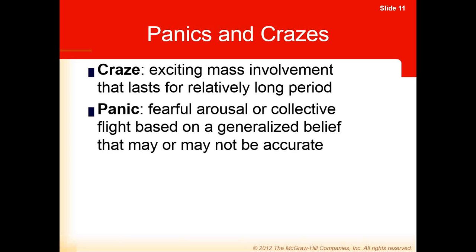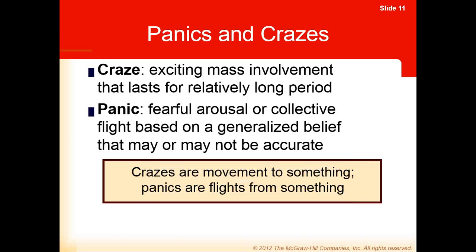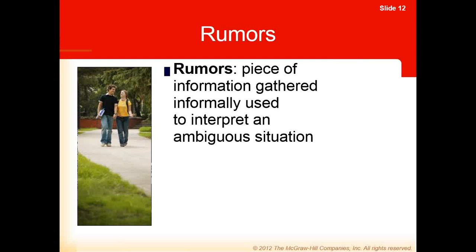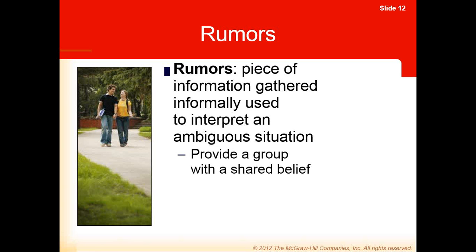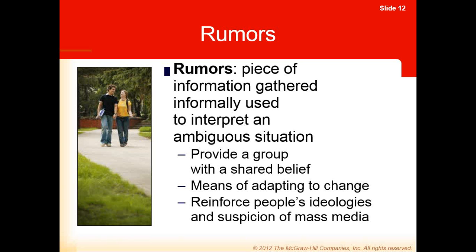Crazes — like raves or breakdancing — are examples. Rumors are information gathered informally to interpret an ambiguous situation. Rumors don't necessarily have to be true; they're just information people use to understand what's going on. Rumors provide a group with a shared belief, serve as a means of adapting to change, and reinforce people's ideology and suspicion of mass media. Gossip is a specific type of rumor that involves information about people.